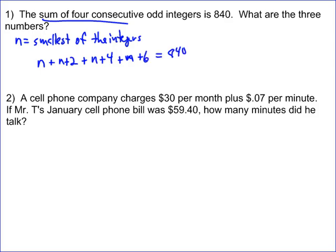So now it's just a matter of solving it. n plus n plus n plus n is going to give you 4n plus 12 equals 840. Then you need to solve this. So you're going to subtract 12 from both sides. And you're going to get 4n equals 828.